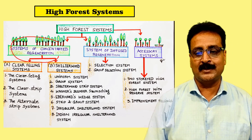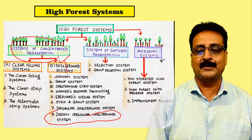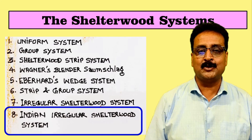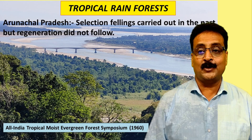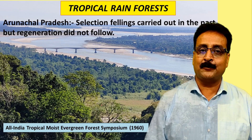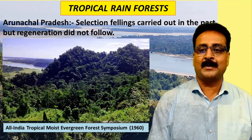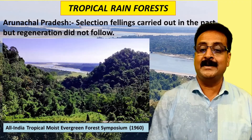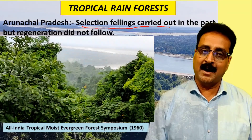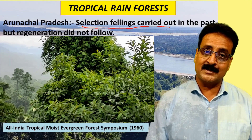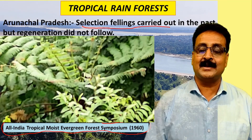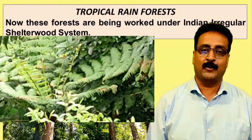The topic is the system of concentrated regeneration — the last topic under the Indian Irregular Shelterwood System. Tropical rainforest is a very complex system where the forest has fully utilized site factors. Earlier, selection felling was recommended for tropical rainforests, but regeneration did not come. So at the All India Tropical Moist Forest Symposium in 1960, it was recommended to use the Indian Irregular Shelterwood System for tropical rainforests.